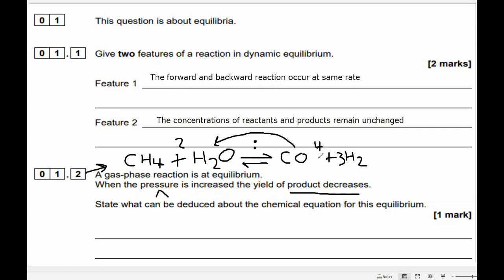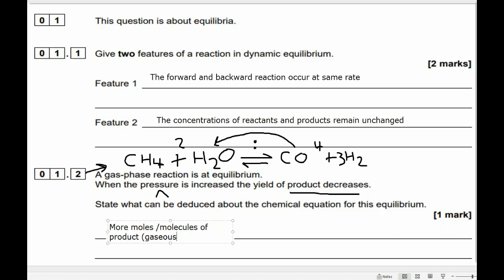So it tells you that the reaction we're dealing with is just like this reaction where we have more moles of product than reactant. What we can learn is that there are more moles — you can say molecules — of product. And that's going to be in the gaseous phase, because it's got to be gaseous to affect or be affected by the pressure.